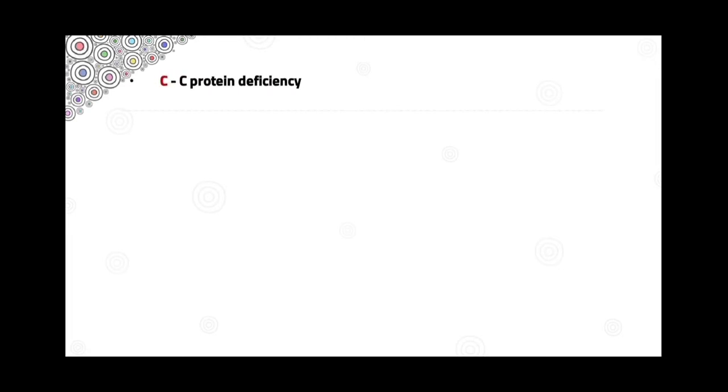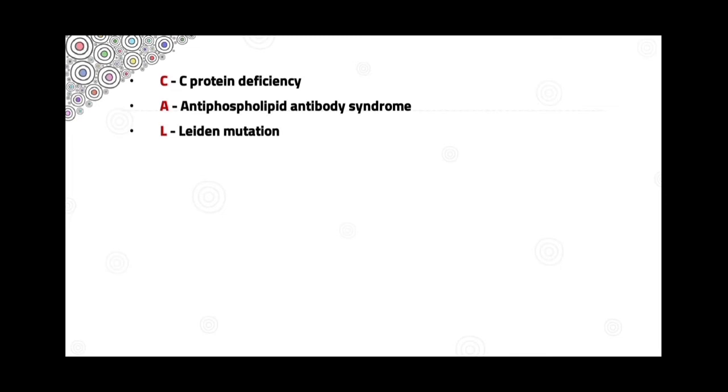C stands for protein C deficiency — the liver forms protein C, which inhibits activated factors 5 and 8. A deficiency means no inhibition of these factors, so coagulation continues unchecked. A stands for antiphospholipid antibody syndrome — increased coagulation due to lupus anticoagulant and anti-cardiolipin antibodies. L stands for Leiden mutation — factor 5 is resistant to the inhibitory effects of protein C, causing more coagulation.